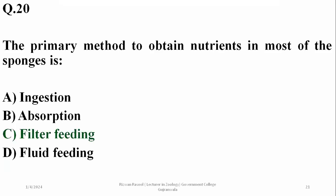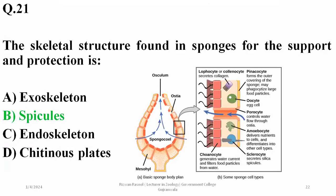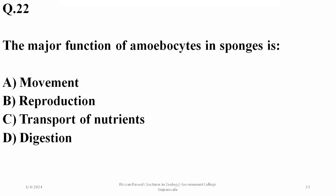The primary method for sponges to obtain nutrients is filter feeding, and they also show absorption — C is the right option. The skeletal structures found in sponges for support and protection are spicules, so B is the answer.